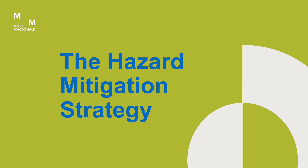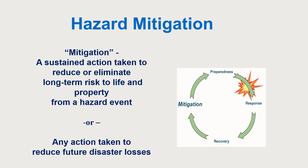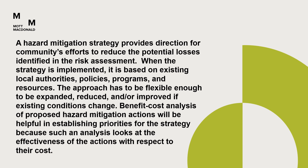The Hazard Mitigation Strategy. Mitigation is a sustained action taken to reduce or eliminate long-term risk to life and property from a hazard event, or any action taken to reduce future disaster losses. A hazard mitigation strategy provides direction for communities' efforts to reduce the potential losses identified in the risk assessment. When implemented, it is based on existing local authorities, policies, programs, and resources, and must be flexible enough to be expanded, reduced, or improved if existing conditions change. Benefit-cost analysis of proposed hazard mitigation actions will be helpful in establishing priorities.